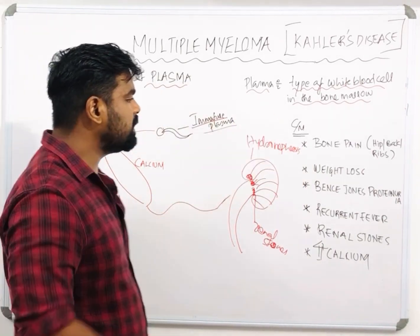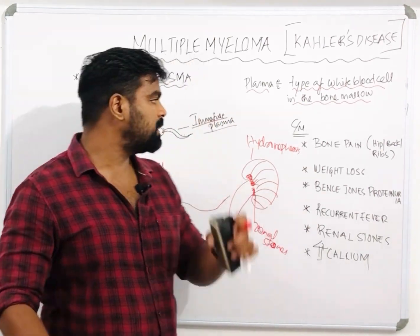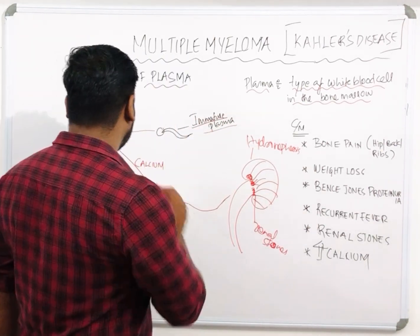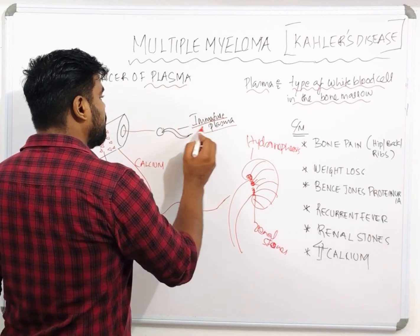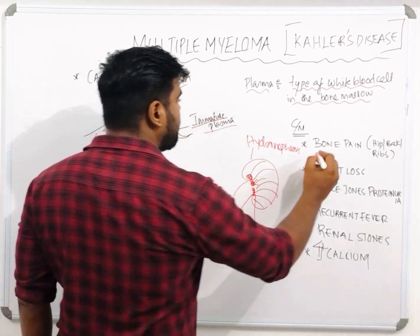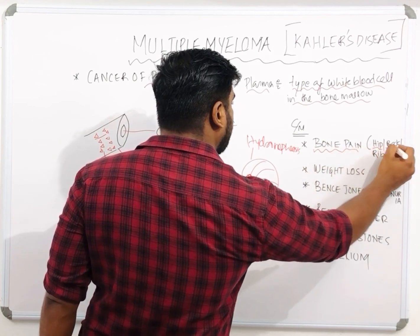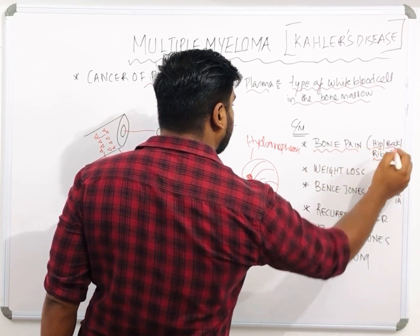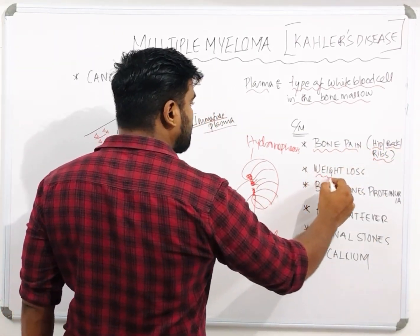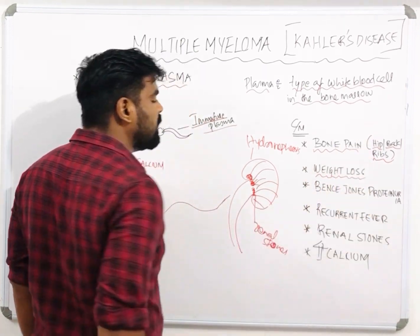Now let me discuss the clinical manifestations of multiple myeloma. As the immature plasma will destruct the bone, it will cause severe bone pain especially in the hip, back, or rib area. The patient may also have weight loss, as it is an early sign of cancer.